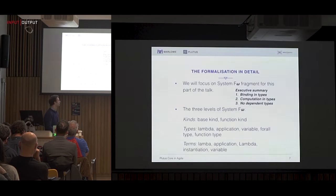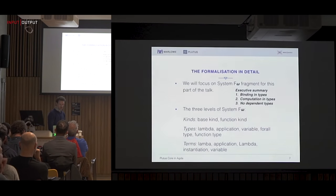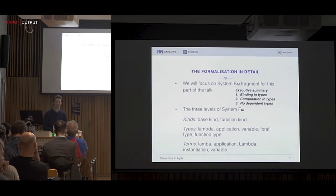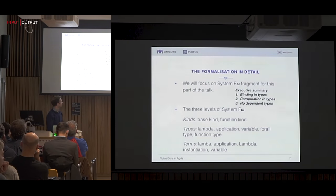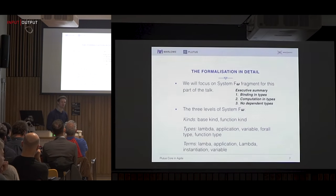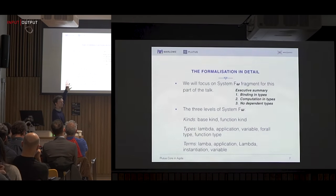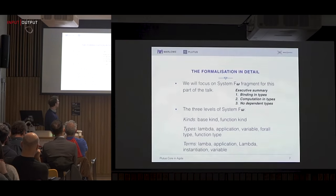Now I'll look in detail at the System F fragment of Plutus Core, which is in a sense the core. System F Omega has three levels: kinds, which are just a base kind and a function kind — exactly like simply typed lambda calculus. At the type level we have lambda, application, and variable — the terms of simply typed lambda calculus at the type level — and then we have the for-all from the polymorphic bit of System F, and we have function types.